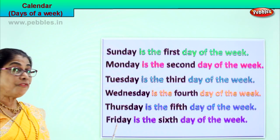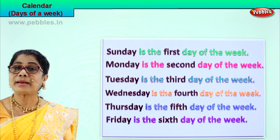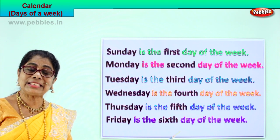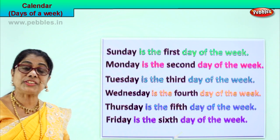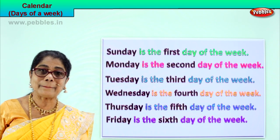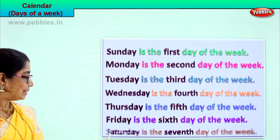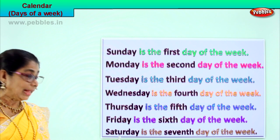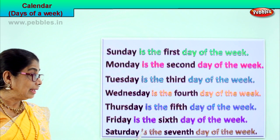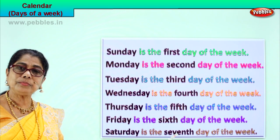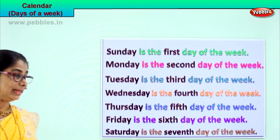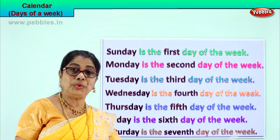Next. Friday. Spell Friday: F-R-I-D-A-Y. Friday is the sixth day. Spell sixth: S-I-X-T-H. Friday is the sixth day of the week. The seventh day — S-E-V-E-N-T-H — seventh. Saturday is the seventh day of the week.